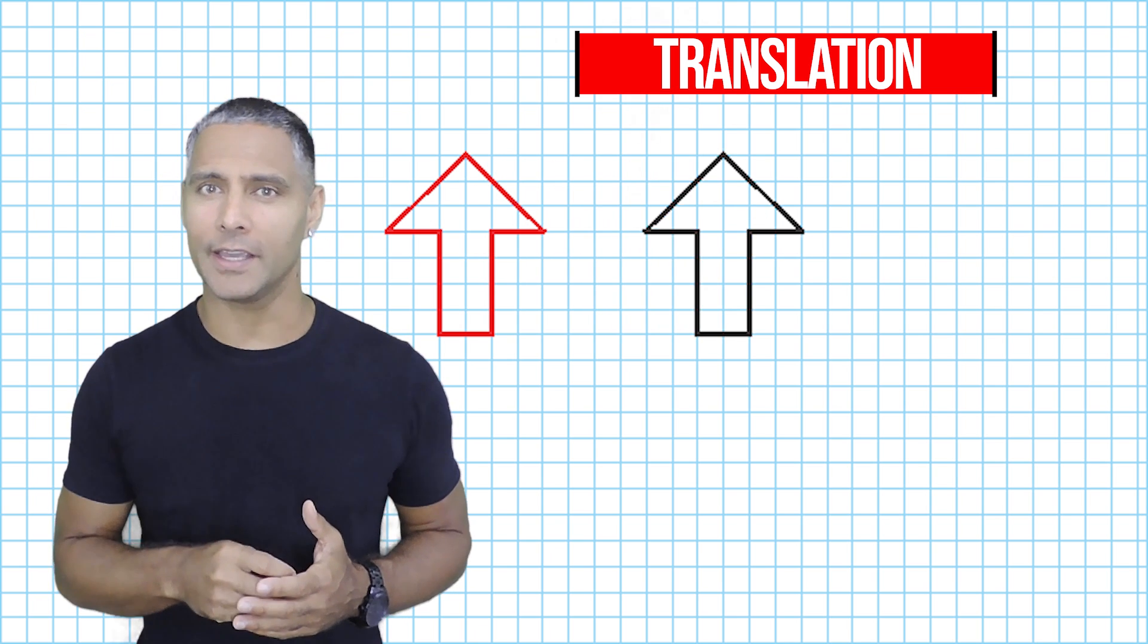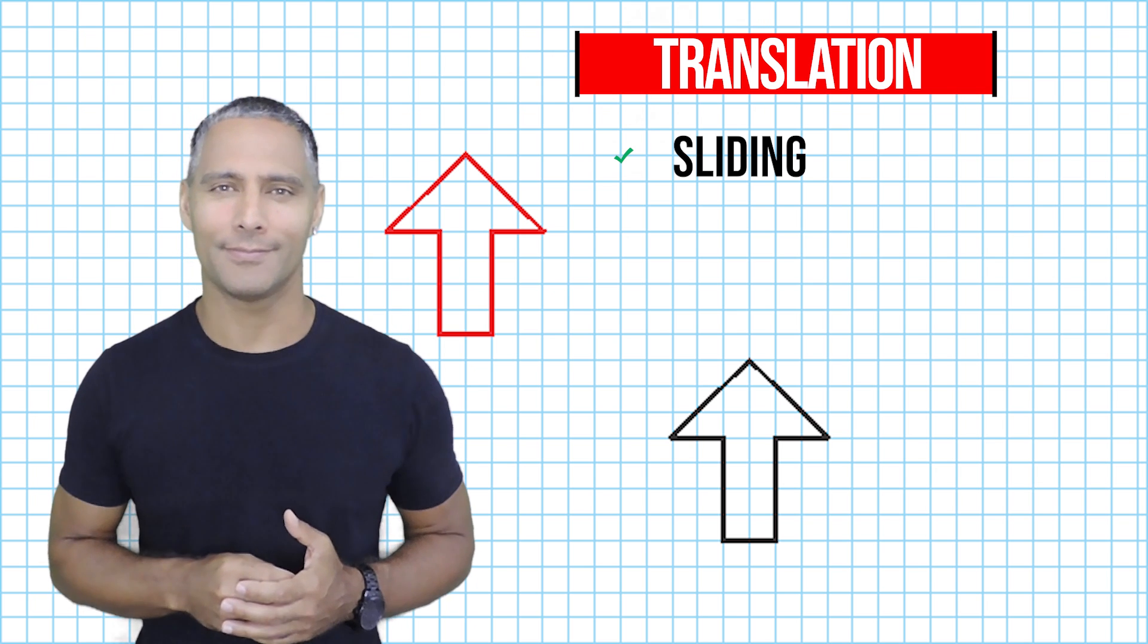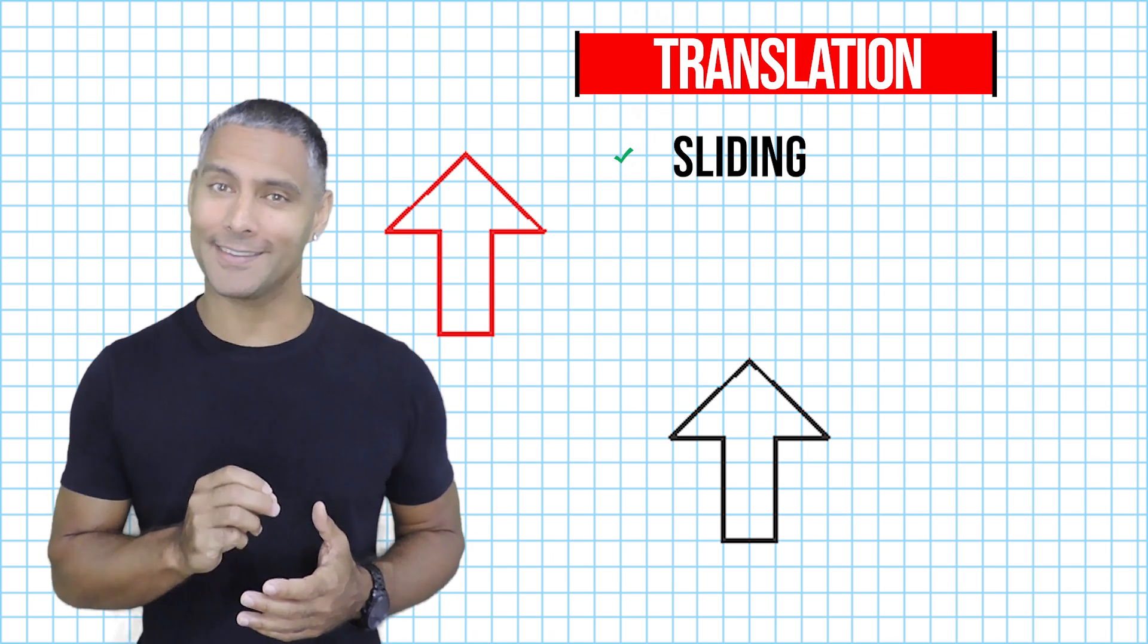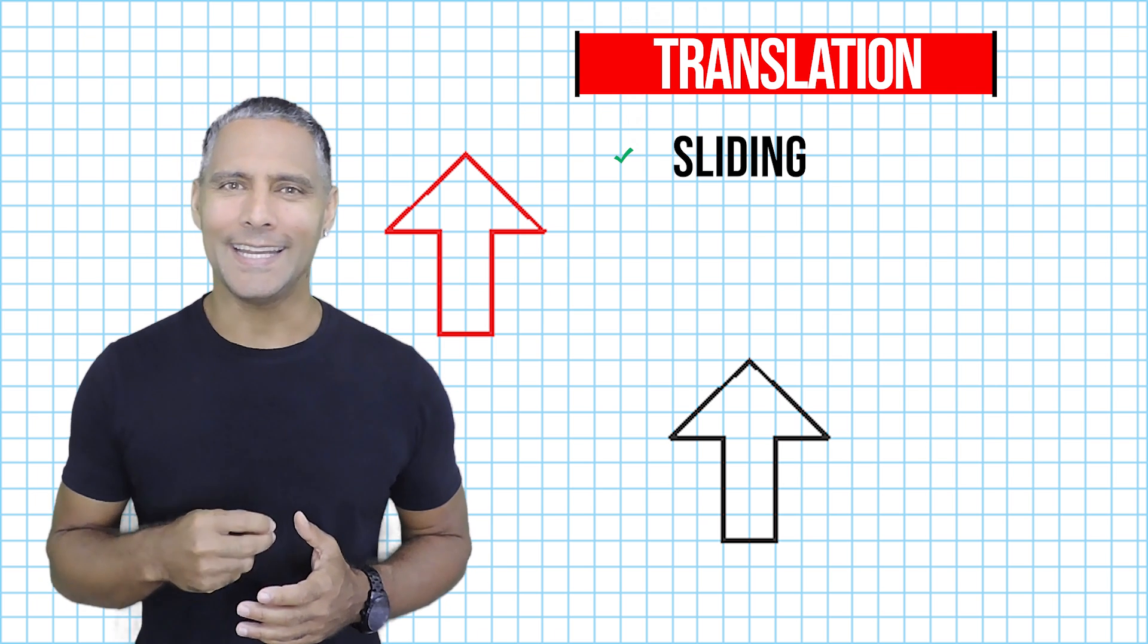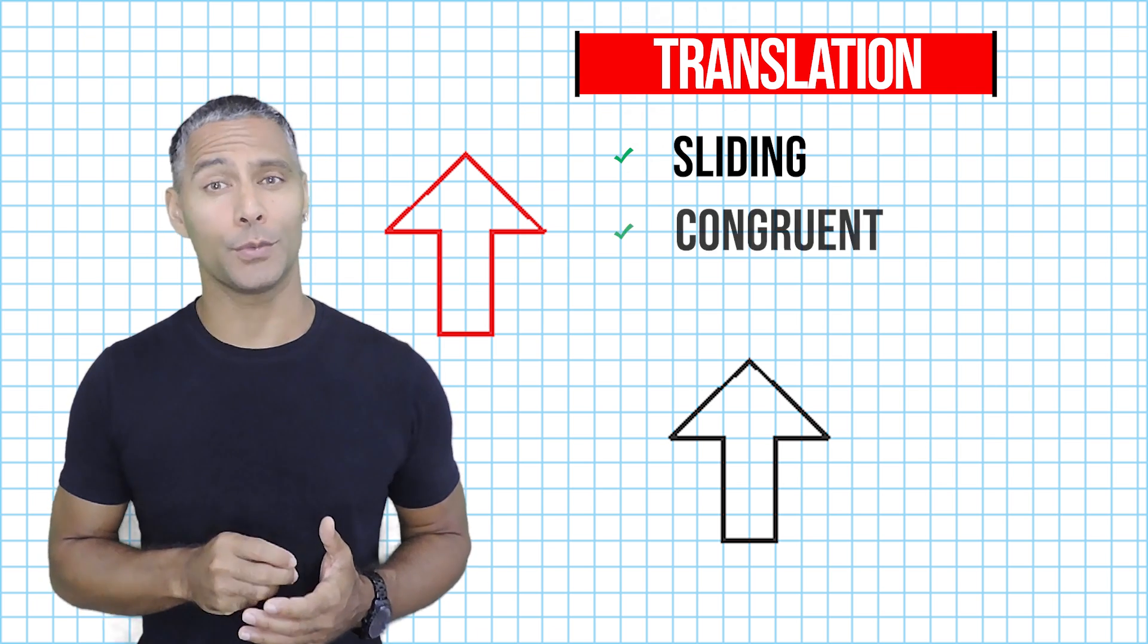If it looks like an object is sliding, we can quickly recognize that we are dealing with a translation. Also notice that the object maintain the same shape and the same size. Anytime we translate an object, the resulting object will be congruent to its original.